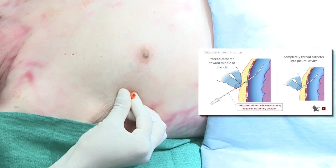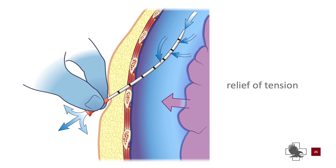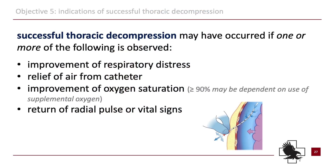Tension should relieve at this point. Hold the catheter in position and secure the catheter hub according to protocol. Successful thoracic decompression will have one or more of the following observed.